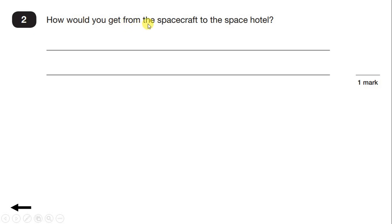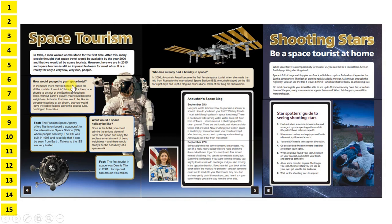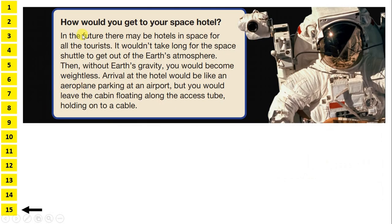Question 2: How would you get from the spacecraft to the space hotel? Let's keep reading the text — we'll probably find the answer under the subheading 'How would you get to your space hotel?' In the future, there may be hotels in space for all the tourists. It wouldn't take long for the space shuttle to get out of the Earth's atmosphere. Then, without Earth's gravity, you would become weightless. The first part of the paragraph is about how the space shuttle would leave Earth, not how you would get to the hotel.